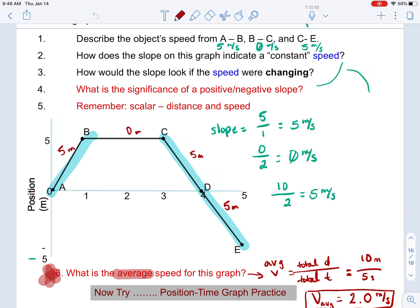So, AB has a positive slope. CE has a negative slope. Down at the bottom, the very last question, number six, what is the average speed for this graph?